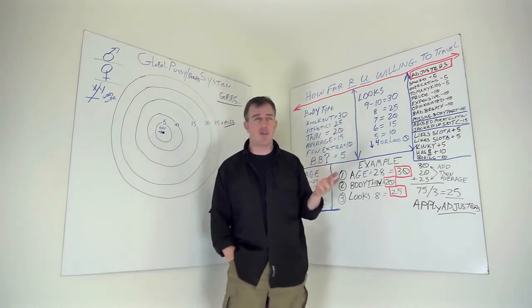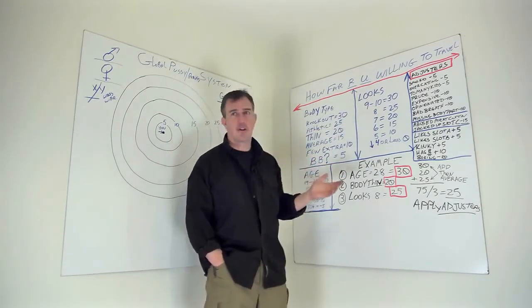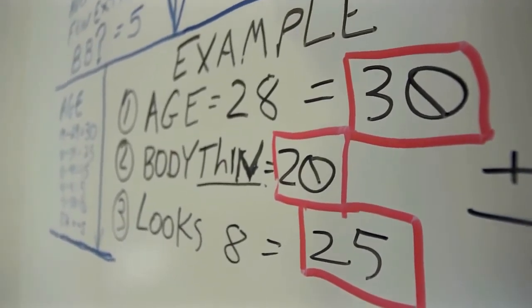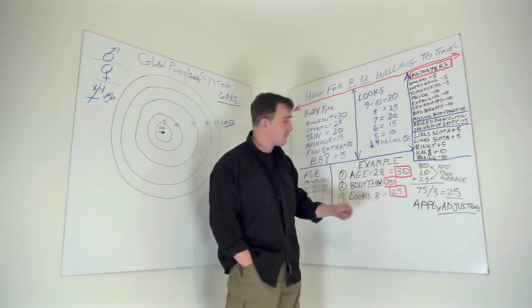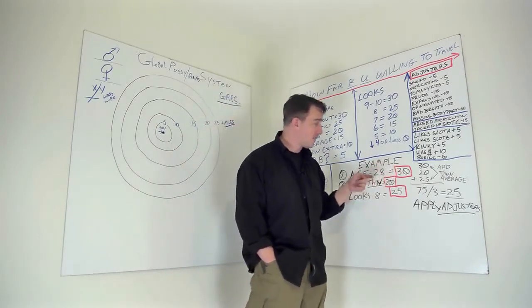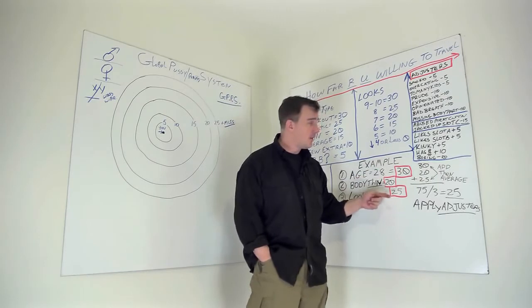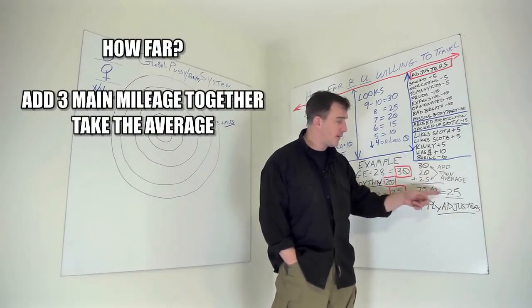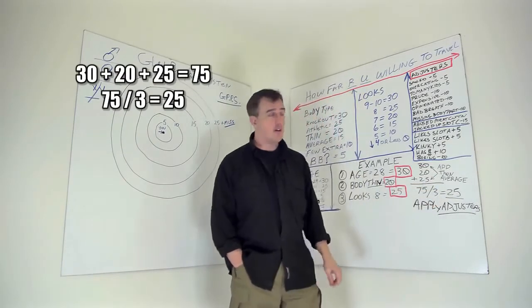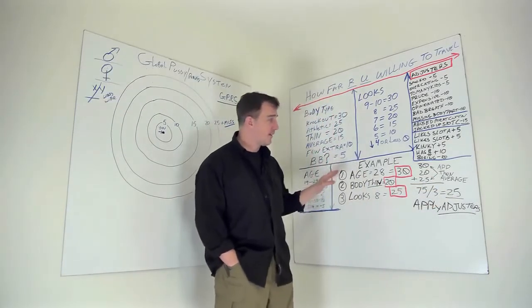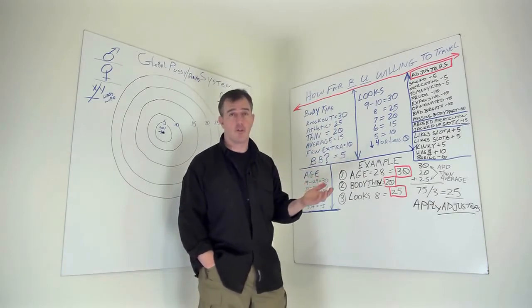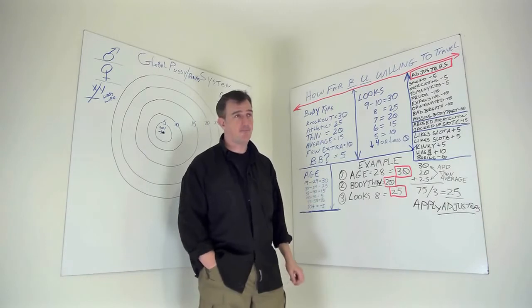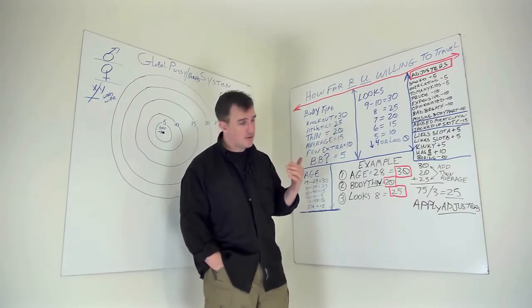All right, now you're like, oh Pop, you've got these three categories, how do they work? Well, I'm going to explain that to you. Okay, here's an example problem. 28, thin, with eight looks. All right, you come down here and it's 30 miles, 20 miles, and 25. You add them all up to 75 and then you average them by three, 25 miles. On this particular case, in this particular setting, you're willing to do the 25 miles. And you might do the 25 miles the first time until you find out your adjusters.